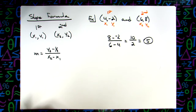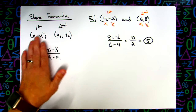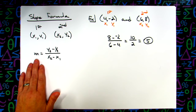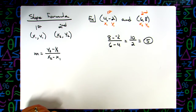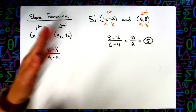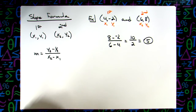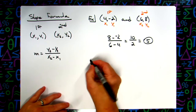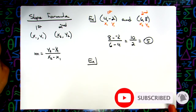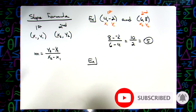Instead of always giving you two points and asking you to find the slope, they could give you a slope and one point and then one of the coordinates, asking you to find the other. So it's not always just a straightforward plug-in-the-formula situation.